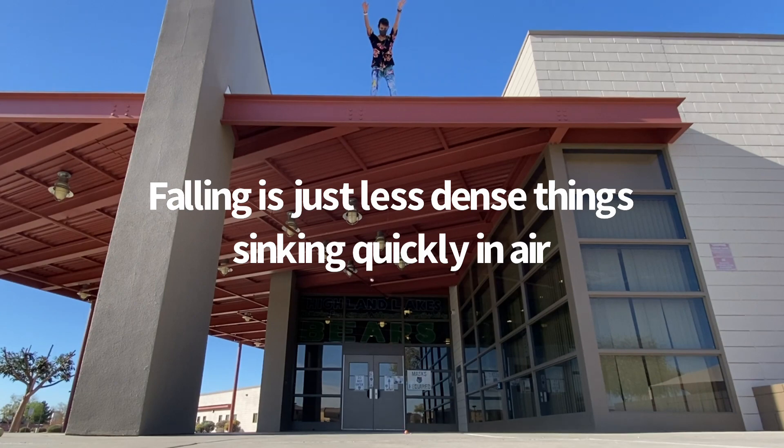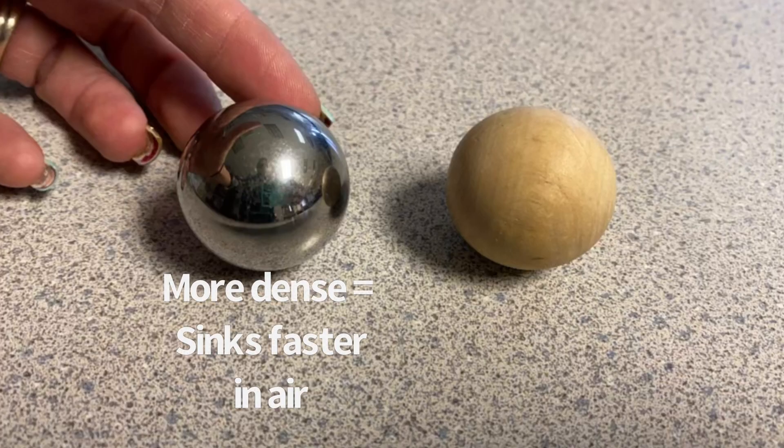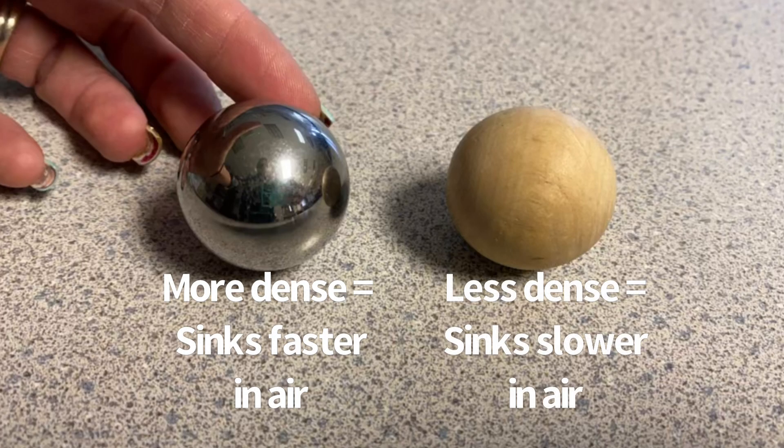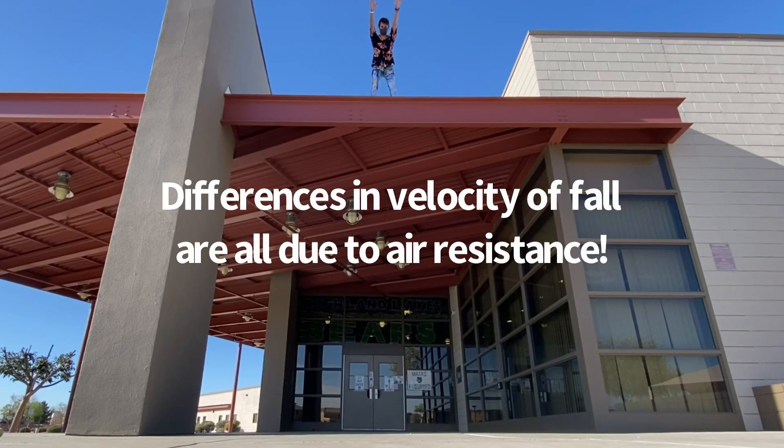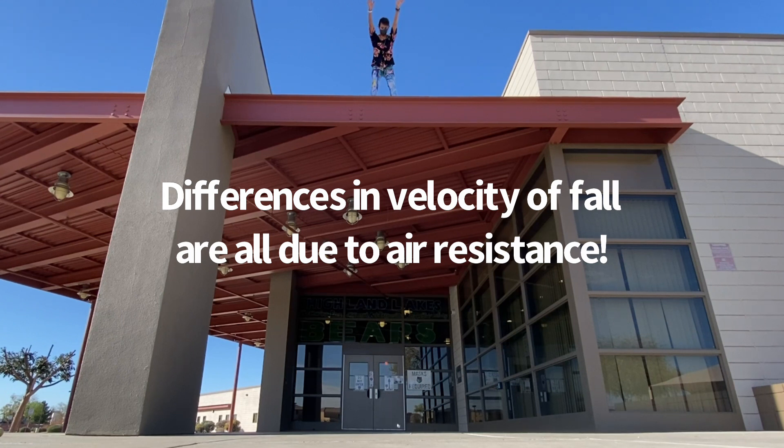So basically, when things fall, it's just sinking really fast in air, and more dense things that have more mass per volume sink faster than less dense things. So the reason that things fall faster or slower isn't really gravity. It's more to do with the air resistance that resists the pull of gravity on the object.